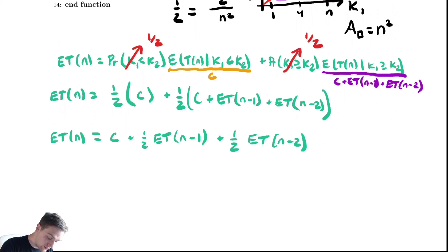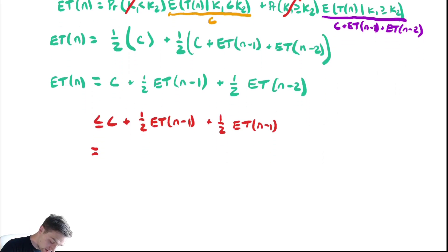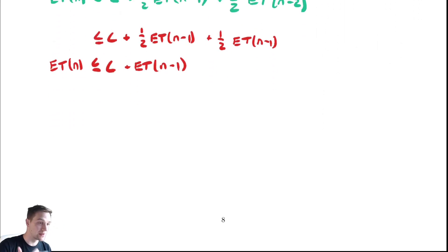I'm going to bound it above first. I can make this bigger by replacing the smaller of the two recursive calls, the n minus 2 recursive call, with the larger of the two. So we replace the ET(n-2) with an ET(n-1). That definitely makes it bigger. And I'm actually going to keep the inequality here just to be true. So now we can do some substitutions. The substitutions are really easy because we are just doing a chip and conker and our additional cost is constant.